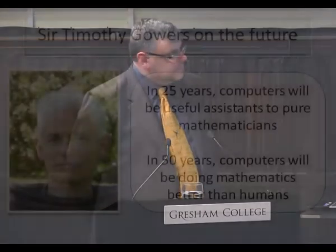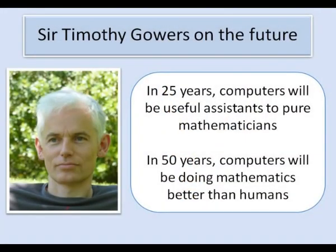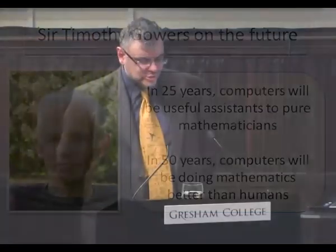So what does this mean for the practicing mathematician? In a popular lecture last year Sir Timothy Gowers predicted that in 25 years time computers will be useful assistance to pure mathematicians and that in 50 years time they will be doing mathematics better than humans. Should this come to pass, would pure mathematics still hold any interest for human beings?